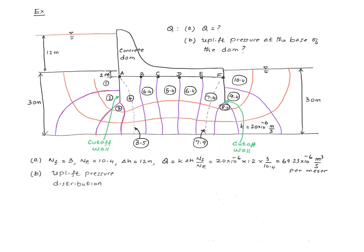Now let's calculate the uplift pressure distribution at the base of the dam. I have selected six points to do this calculation. Remember the procedure for calculating the pore pressure at any given point in the soil domain when there is water flow: we calculate the total head, subtract the elevation head to get the pressure head, then multiply by the density of water to get the pore water pressure. When repeating calculations, it's better done in a table.